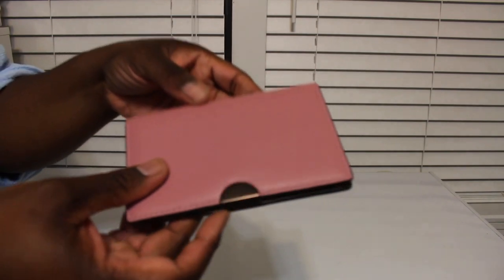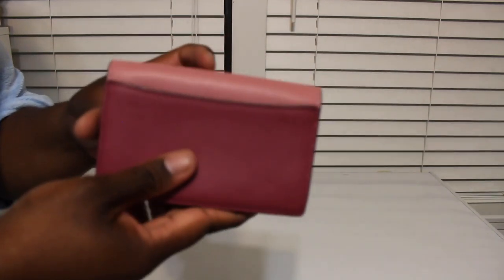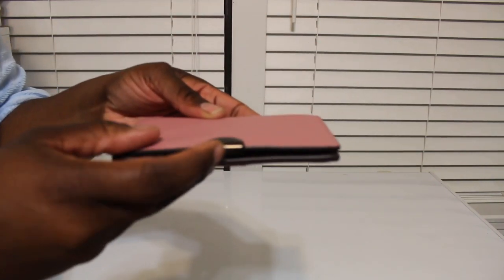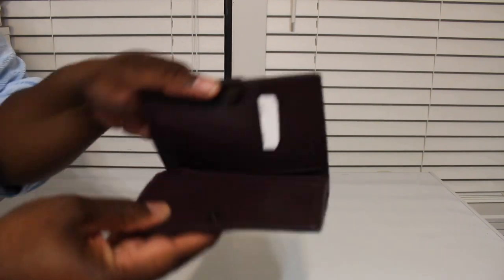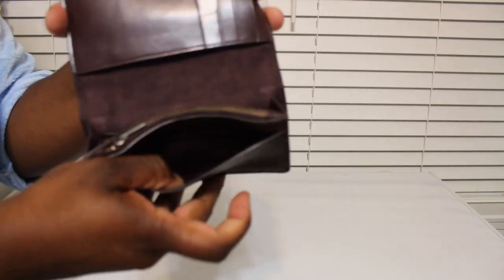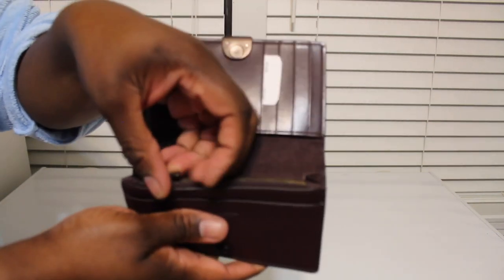But anyway, here it is. This is the color block because it's two different colors. So here's the front and then it has Coach right there. It's just a small little wallet, has a little pocket there, then you have your zipper here.